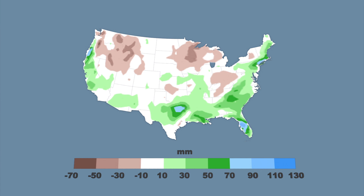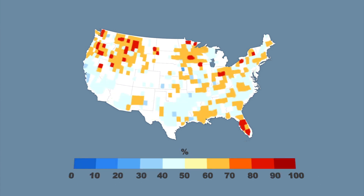El Niño tends to increase precipitation along U.S. coastlines, but the Midwest and Northwest tend to see a decrease from the average. The frequency of precipitation is also affected in comparison to average frequency.